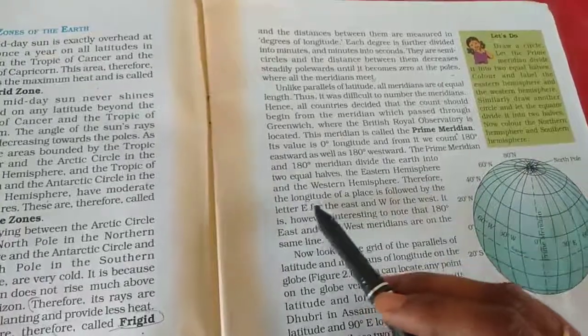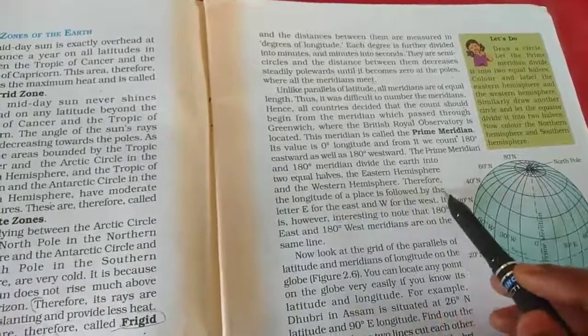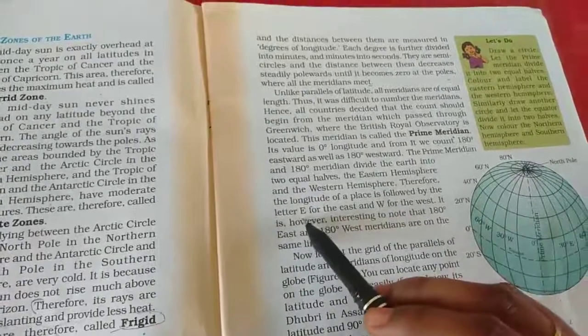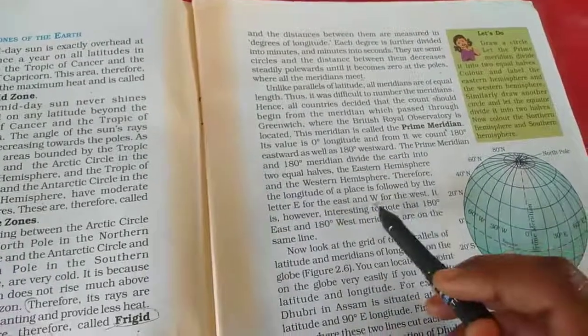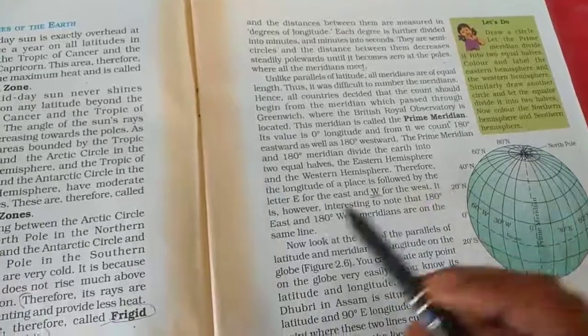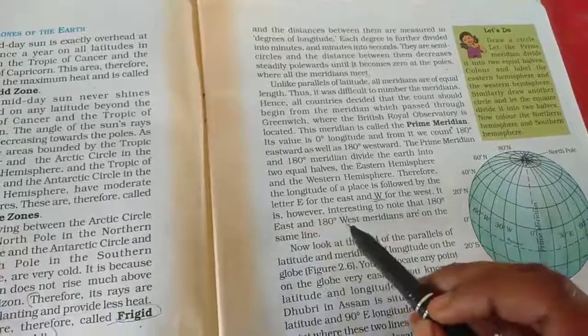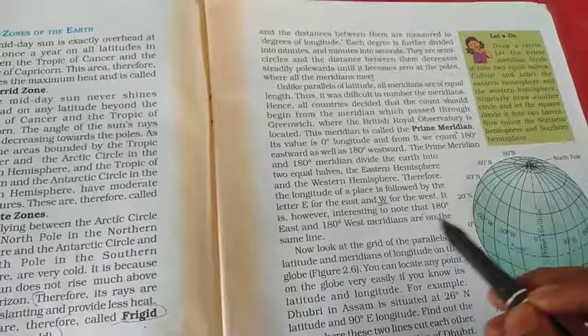Therefore the longitude of your place is followed by the letter E for the east, we have to refer E. For the west, we have to refer W. It is however interesting to note that 180 degree east and 180 degree west meridians are on the same line. Everything at last ends with same lines.